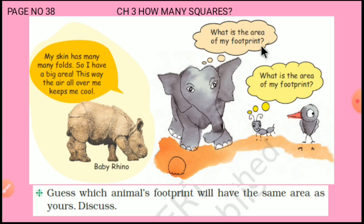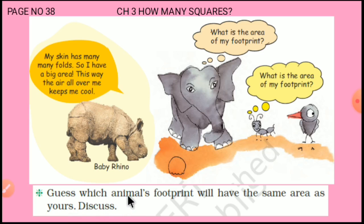The elephant is asking: what is the area of my footprint? And the ant is also asking: what is the area of my footprint? Now guess — whose footprint area is equal to your footprint area? Elephant का तो नहीं हो सकता। Just guess and decide which animal it must be.